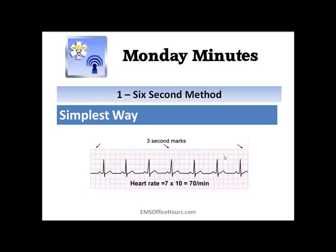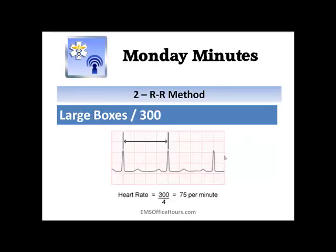The next one is the R-to-R method. You're looking at two R-waves, counting the large boxes between those two R-waves, and dividing by 300. Here you've got four large boxes — one, two, three, four — and dividing by 300 gives you approximately 75 beats per minute. The problem with this method is that while it can be more accurate, the rate has to be regular. If it's not regular, you won't get an accurate count.